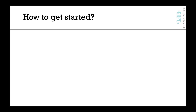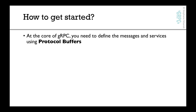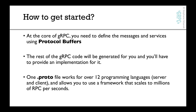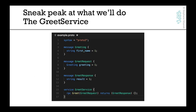So how do I get started? At the core of it, we'll need to define the messages and the services using protocol buffers. The rest of the gRPC code will be generated for us, and we'll just have to implement our service. When we write one .proto file, that will work for over 12 programming languages — server and client — and allow us to use a framework that scales to a million RPC per second. For example, we have a message Greeting, a GreetRequest, a GreetResponse, and at the bottom a GreetService which defines an RPC Greet that takes a GreetRequest and returns a GreetResponse. That's our API contract.